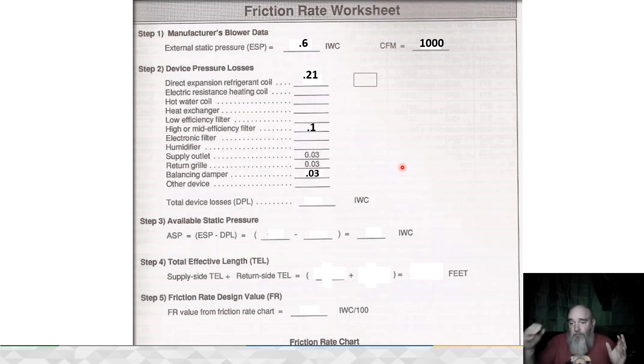We can determine what the actual friction loss per 100 feet through our duct system is if we calculate our friction rate. It's pretty straightforward. The 1000 CFM comes from another calculation that is not 400 CFM per ton.